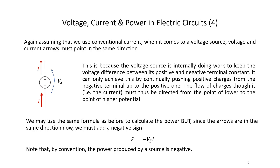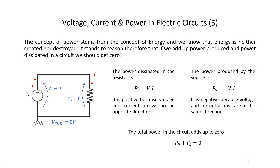To calculate the power of a voltage source we use the same formula, but because the arrows point in the same direction we add a negative sign, clearly indicating that the element is producing power, not absorbing it. We know that energy is neither created nor destroyed, and since power is energy per unit time, this must apply to power as well. In this simple circuit, the power dissipated in the resistor is Vs times I, the power produced by the source is minus Vs times I, and if we add the two powers together we get zero — exactly as expected.